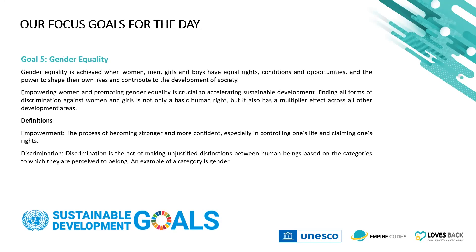Goal 5 is on gender equality, achieved when women, men, girls and boys have equal rights, conditions and opportunities, and the power to shape their own lives and contribute to the development of society. There has been progress over the last decades in empowering women and promoting gender equality. More girls are going to school, fewer girls are being forced into early marriage despite what's happening in the pandemic, more women are serving in parliament and positions of leadership, and laws are being reformed to advance gender equality. Empowering women and girls is not only crucial in accelerating sustainable development — it ends all forms of discrimination against women and girls as a basic human right, and has a multiplied effect across all other development areas.